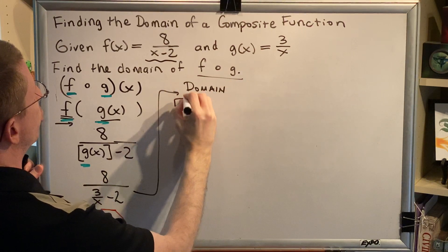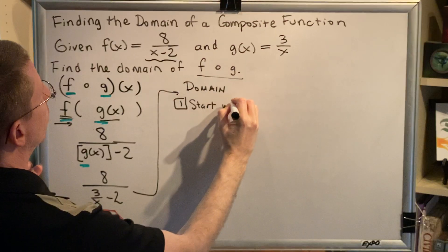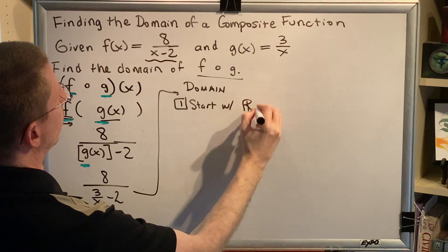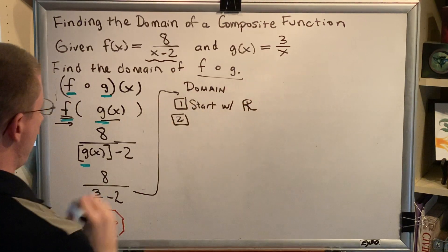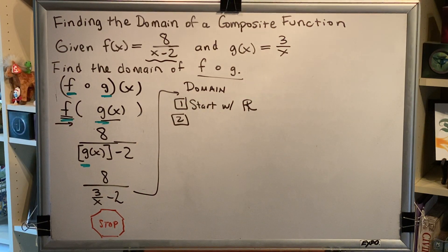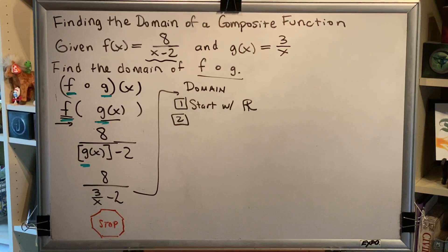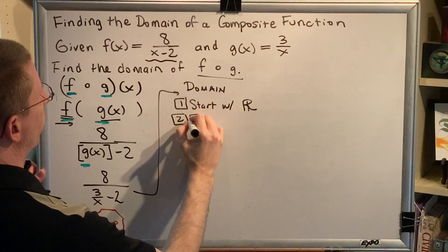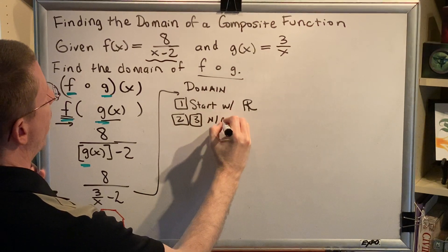Step one is to start with all real numbers. Step two is to look for even index radicals. We don't have any in this problem. Step three is to look for log arguments. We don't have any in this problem. So steps two and three are not applicable.